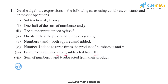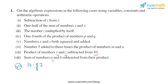In the seventh part, it is given: product of numbers y and z subtracted from 10. The product of y and z can be written as yz, and we are subtracting it from 10, so it can be written as 10 minus yz.